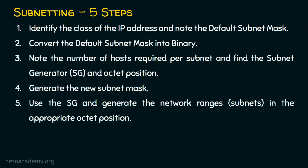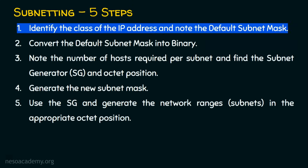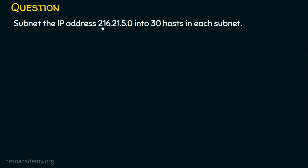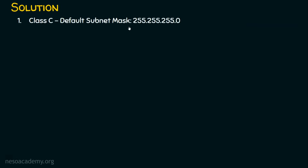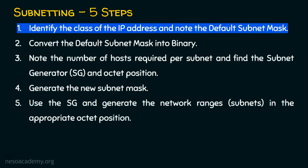Step one: identify the class of the IP address and note the default subnet mask. This is a class C IP address, and the default subnet mask for class C is 255.255.255.0. Step one is now complete.